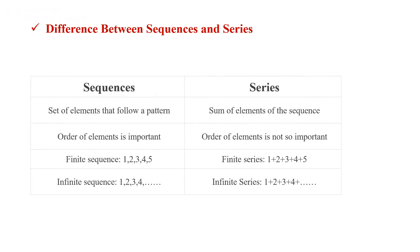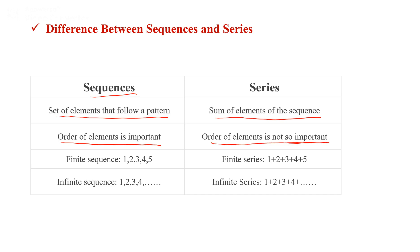The difference between sequence and series: a sequence is a set of elements following a particular pattern, while a series is the sum of elements of the sequence. In a sequence, the order of elements is important, but in a series, the order is not important. For example, one plus two plus three can be written as two plus one plus three, but in a sequence, each element has a fixed position.